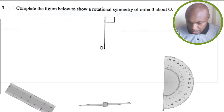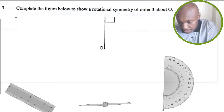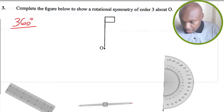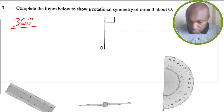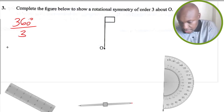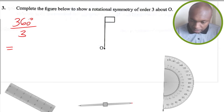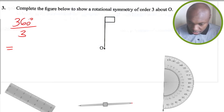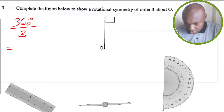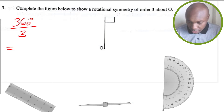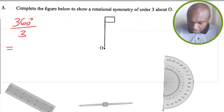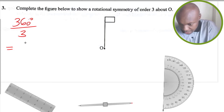To draw the figure with rotational symmetry of order 3, we take 360 degrees — the sum of angles at point O for one complete rotation — and divide by 3 to find the angle for each rotation. Each rotation should cover 120 degrees, so three rotations give 120 times 3, which equals 360. We get the angle 120 by dividing the sum of angles at O, which is 360, by 3.